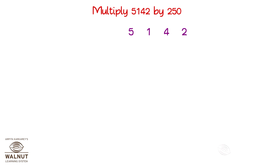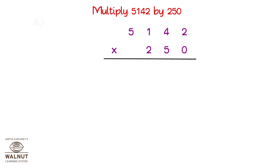Multiply 5,142 by 250. We do it systematically. We start with zero. Zero twos are zero. Zero fours are zero. Zero ones are zero. And zero fives are zero.